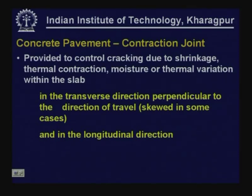Contraction joints are provided to control cracking in the slab due to shrinkage, thermal contraction, moisture or thermal variation within the slab. These are basically there to relieve stresses produced because of variation in temperature, variation in moisture — basically variation in volume either of the slab or with reference to the slab. These are usually provided in the transverse direction at predetermined spacing, perpendicular to the direction of travel. In some cases these are provided with some skew — not exactly perpendicular — to avoid the critical combination of wheel load stresses and other stresses being very critical at these junctions.